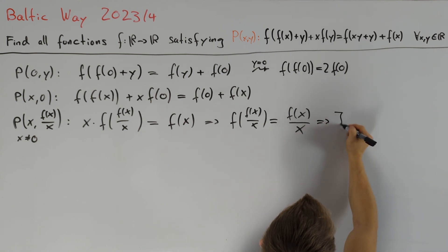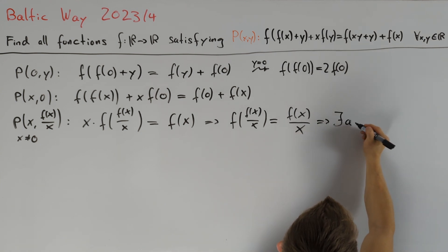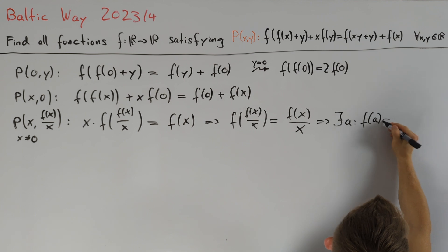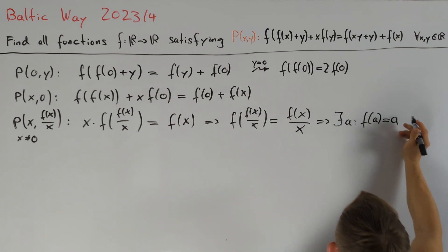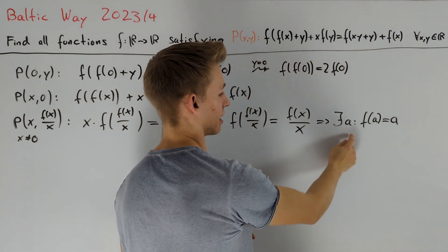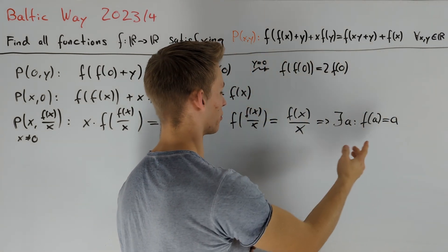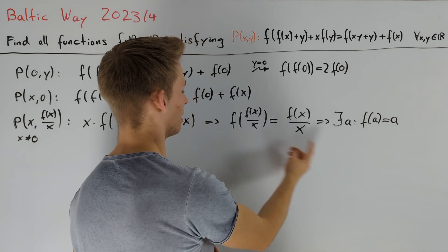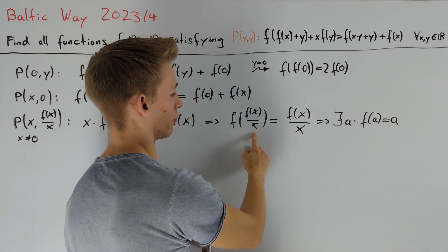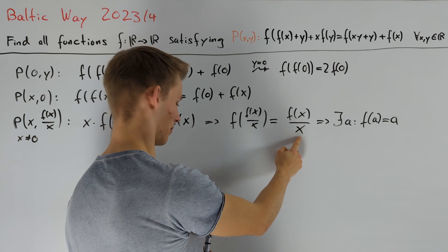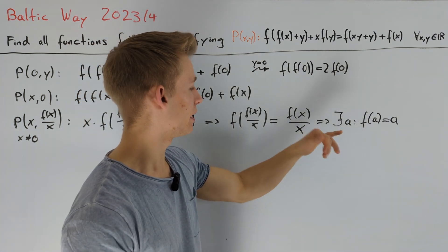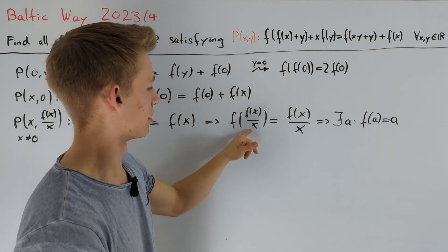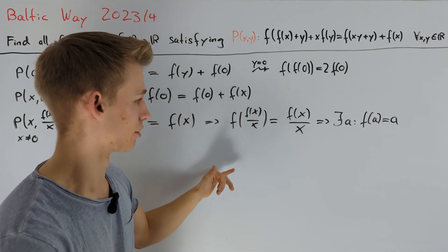So we find at least one value such that f of that value equals that value. Let a be a value such that f(a) = a. It would be great if we can find such an a not equal to 0, because then we can plug in this value for x to get f(1) = 1. We know that a can be any value of the form f(x)/x where x ≠ 0.